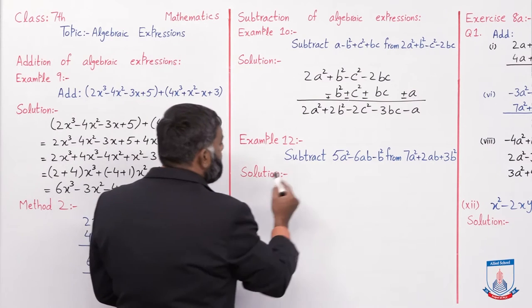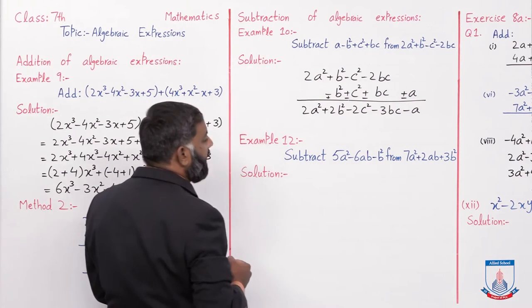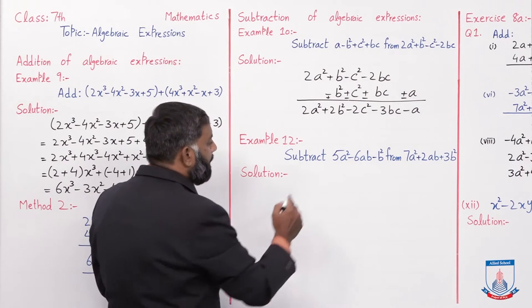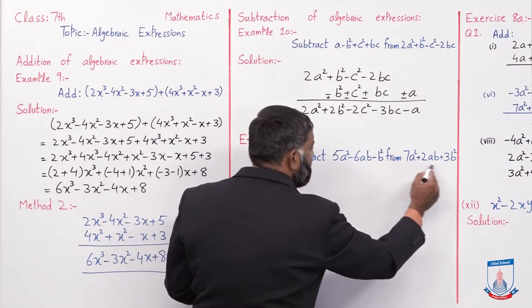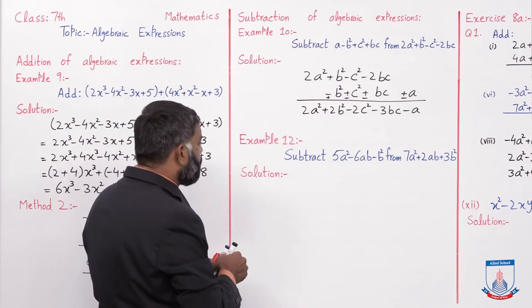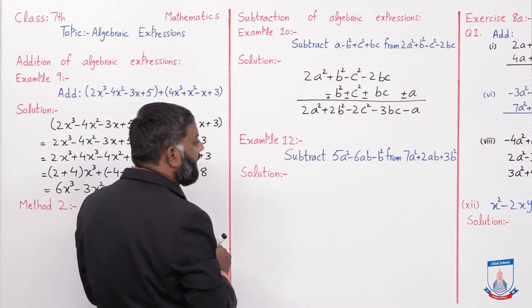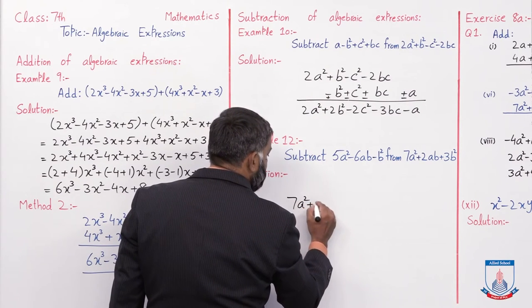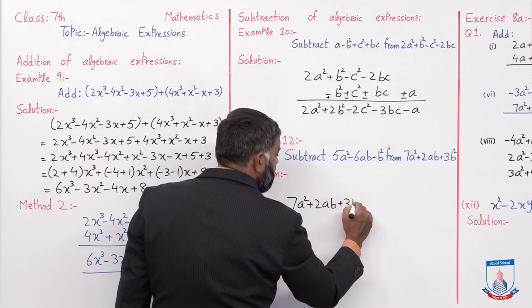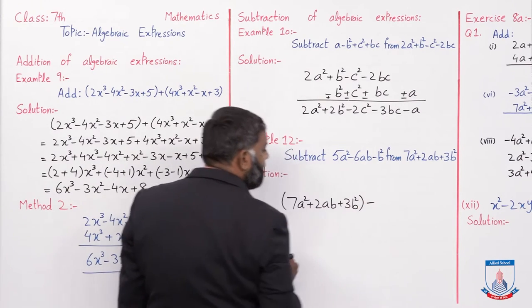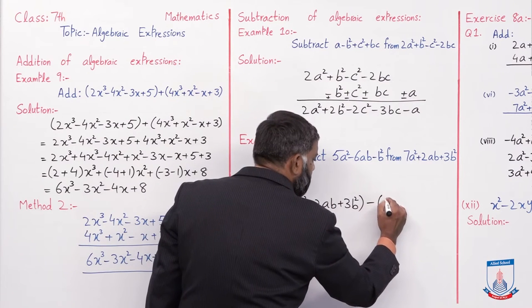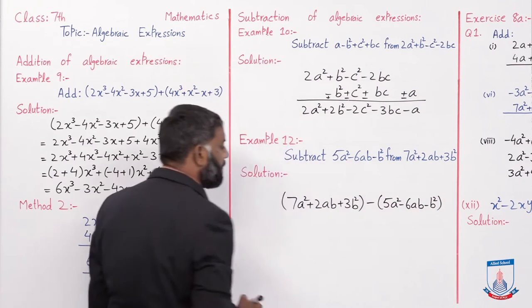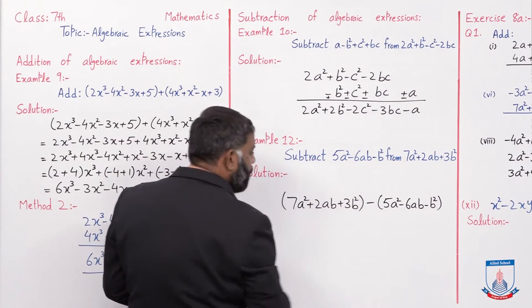Ab example 12 karenge: subtract (5a² - 6ab - b²) from (7a² + 2ab + 3b²). Yeh first expression hai, isko subtract karna hai second expression mein se. Is example ko method 2 se solve karunga. Horizontally likhte hain. Pehle: 7a² + 2ab + 3b², phir subtract karne ke liye minus ka sign aur bracket mein: (5a² - 6ab - b²).